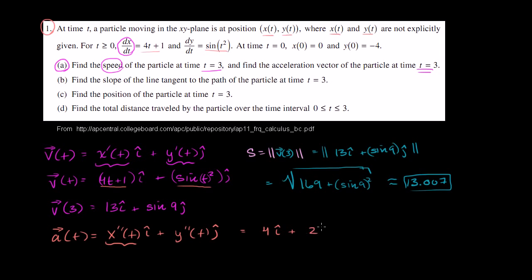The derivative of sine of t squared is going to be 2t times cosine of t squared, and of course we have our j. I just did this from the chain rule: the derivative of t squared with respect to t is 2t, and the derivative of sine of t squared with respect to t squared is cosine of t squared. So that is the acceleration vector as a function of t.